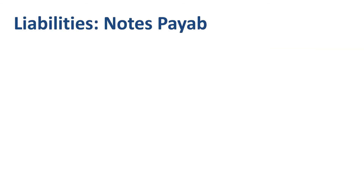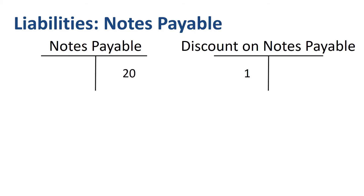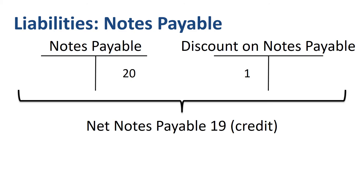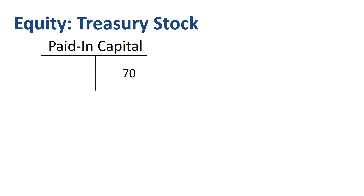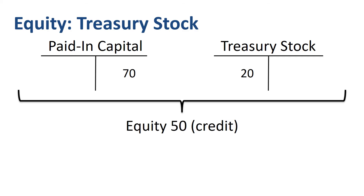Liabilities can also have a CONTRA liability account. For example, the notes payable liability is 20 (credit), offset by a discount on notes payable of 1 in a CONTRA liability account, to get to net notes payable of 19. A similar thing applies in equity: paid-in capital of 70 (credit), minus 20 (debit) recorded in the CONTRA equity account treasury stock, to get to net equity of 50.